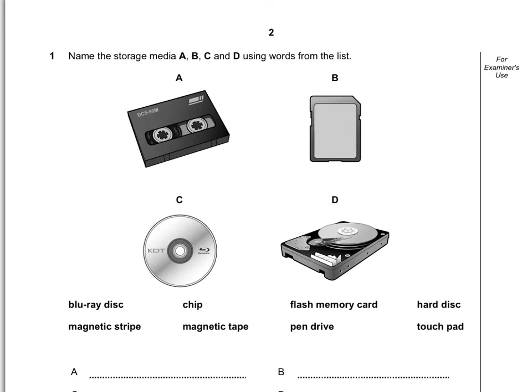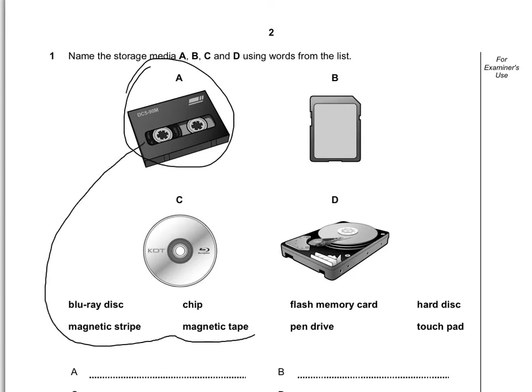The first question identifies some devices that you may not be familiar with. Name the storage media A, B, C and D using the words from the list below. If I just quickly highlight this one — this particular one you're not very familiar with — A is a magnetic tape, a very old fashioned storage device. It's a serial access type of data.